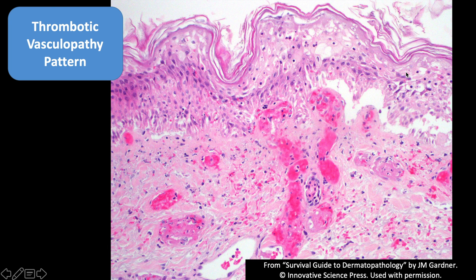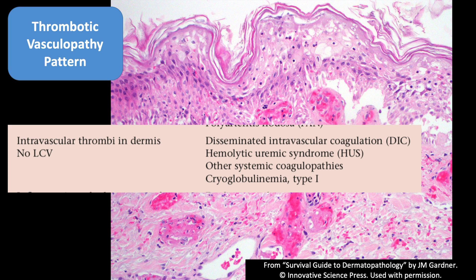Anytime you see this pattern of sudden epidermal necrosis, you have to determine why there is ischemia, because a lot of these situations are medical emergencies. The causes include DIC and coagulopathies, cryoglobulinemia, angio-invasive fungal infection, calciphylaxis, and a variety of other very serious conditions. This needs to get to the treating physician right away so they can work up the patient — do a coag workup and check for other causes.